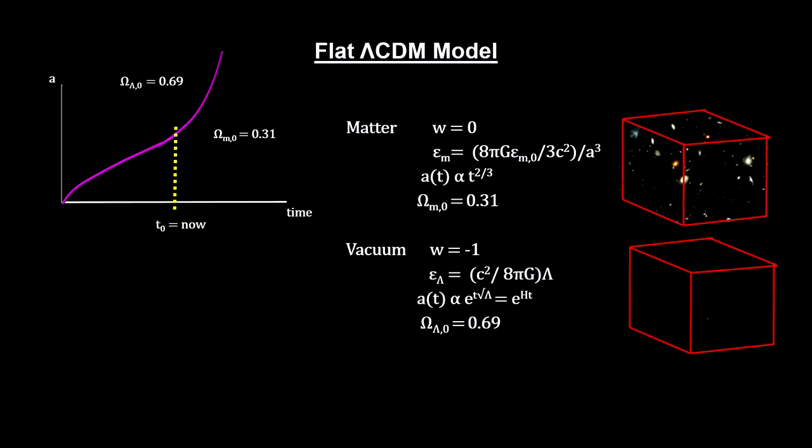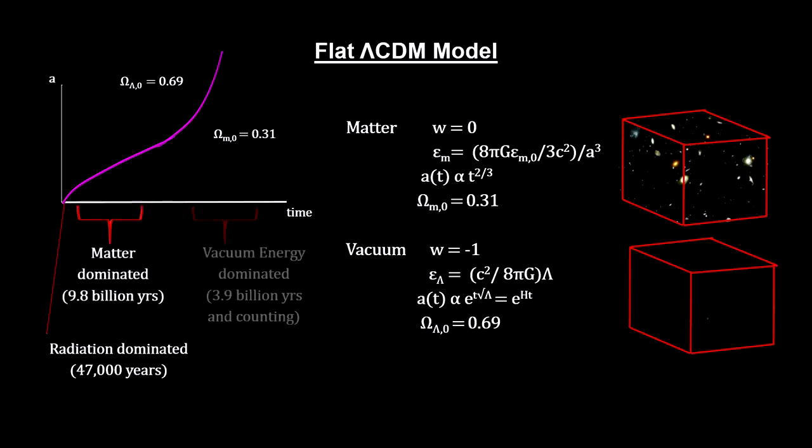Under this model, the universe was matter dominated for most of its existence since the Big Bang. It was radiation dominated for a mere forty-seven thousand years. Matter dominated for 9.8 billion years. And currently in transition to complete vacuum energy domination.